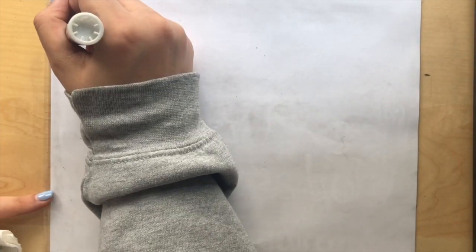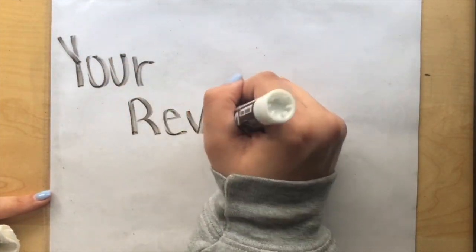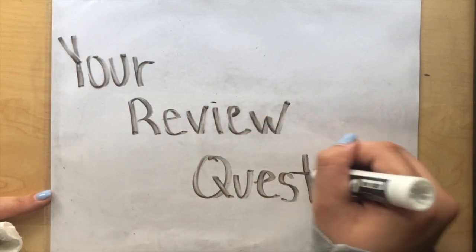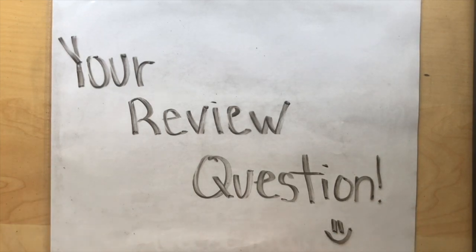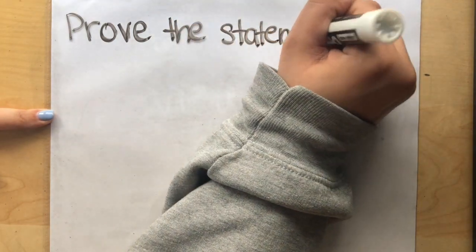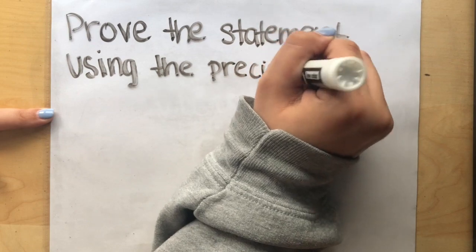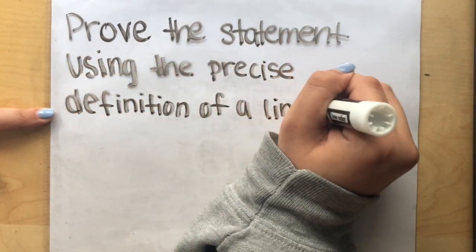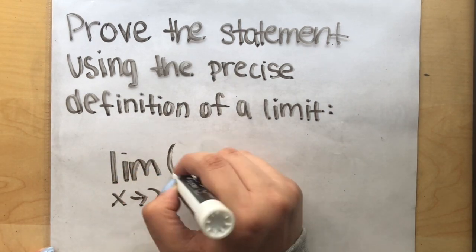Finally, here is your review question. The review question can be found in the book at the end of chapter 1 in the chapter 1 review and it is question number 41. The question states, prove the statement using the precise definition of a limit: the limit of 14 minus 5x as x approaches 2 is equal to 4.